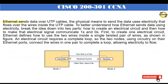Ethernet sends data over UTP cables; the physical means to send the data uses electricity that flows over the wires inside the UTP cable. To understand how ethernet sends data using electricity, break the idea into two parts: how to create an electrical circuit, and how to make that electrical signal communicate ones and zeros. To create one electrical circuit, ethernet defines how to use the two wires inside a single twisted pair, requiring a complete loop — so the two nodes, using circuitry on their ethernet ports, connect the wires in one pair to complete a loop, allowing electricity to flow.